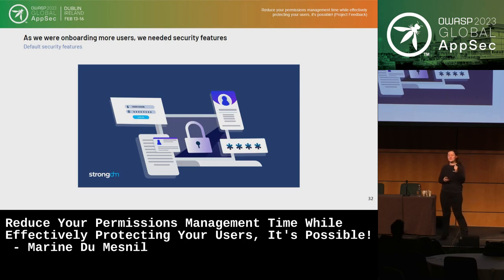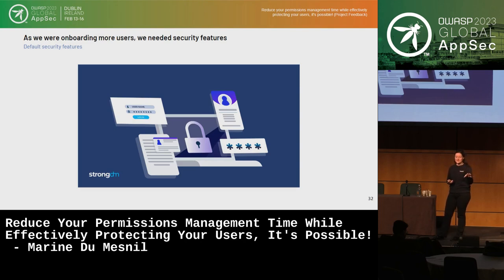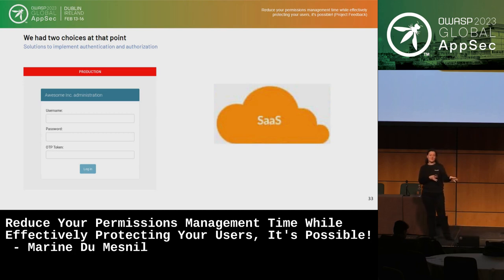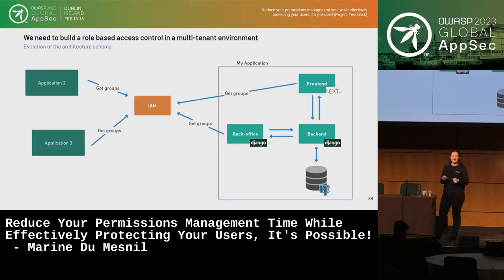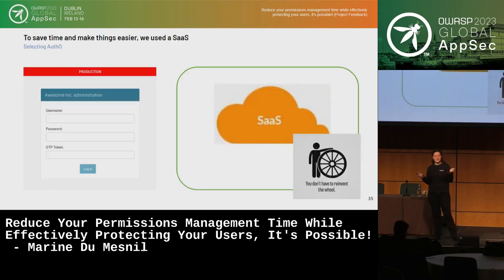At that time, we were onboarding more and more users, and we didn't have in the app basic security features like multi-factor authentication, password management, or security logs. We also wanted to block a user if there were many login attempts on their account. To add all of that, we had two choices: develop it in our app or use a SaaS. At that time, other apps were being created in our environment, and they also wanted the same management system — so it was another great argument to use a SaaS and not reinvent the wheel.